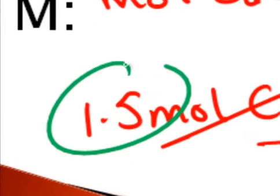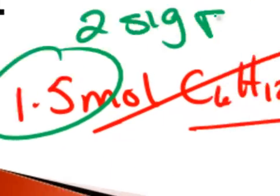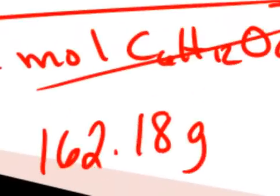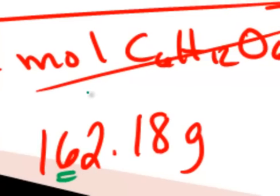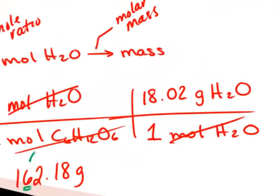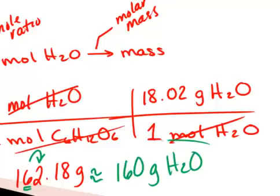1.5 has two significant figures. Our second significant figure is the 6, so we're going to round 162 to the tens place. We look to the right and the 2 tells the 6 to stay a 6. So 162 rounds to 160 grams of water.